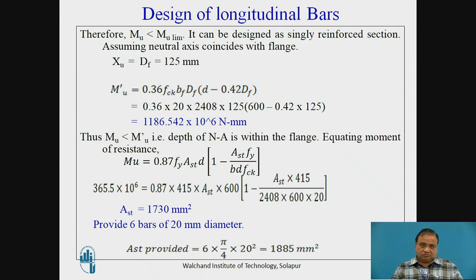Therefore, Mu is less than Mu limit. It can be designed as singly reinforced section, assuming neutral axis to coincide with the flange, taking Xu equals df, that is 125 mm. Mu' = 0.36 × fck × Bf × df × (1 - 0.42 × df). This works out to be 1186.542 × 10⁶ N-mm. Thus, Mu is less than Mu', that indicates that the depth of neutral axis is within the flange.